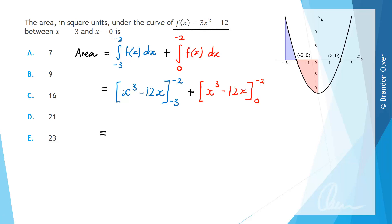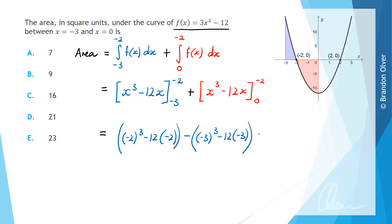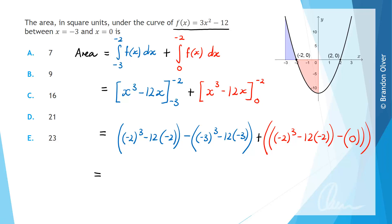Substituting in: for the blue region, we have [(-2)³ - 12(-2)] minus [(-3)³ - 12(-3)]. Then we add the red region: [(-2)³ - 12(-2)] minus [0³ - 12(0)]. Note that 0³ - 12(0) is simply 0, so that term vanishes. Now the aim is to simplify all of that.